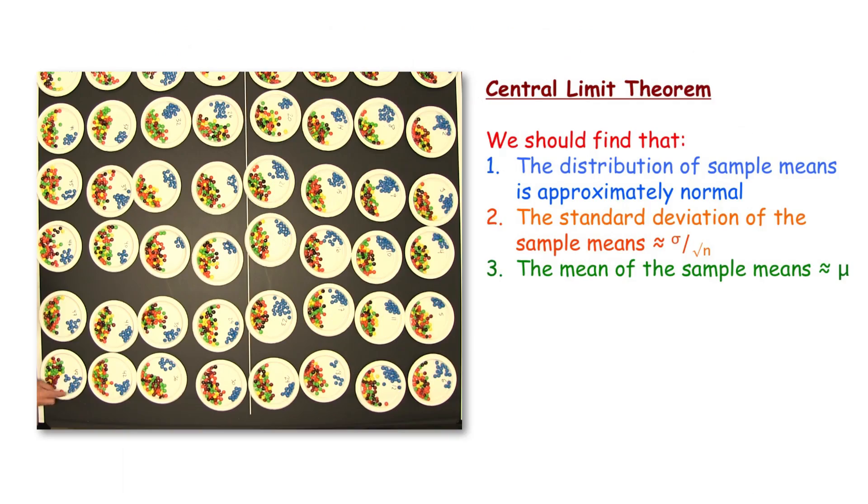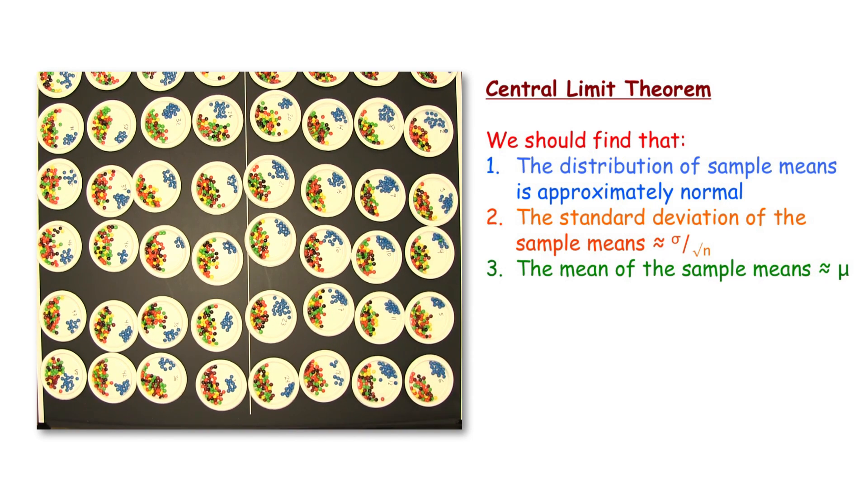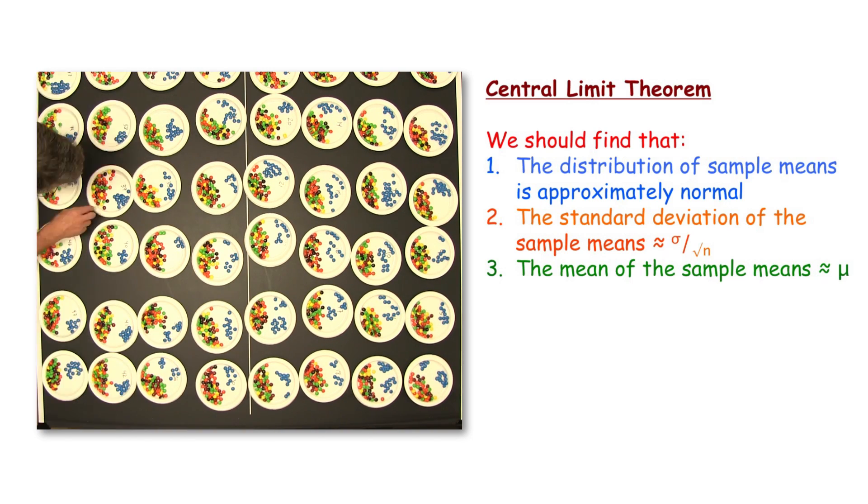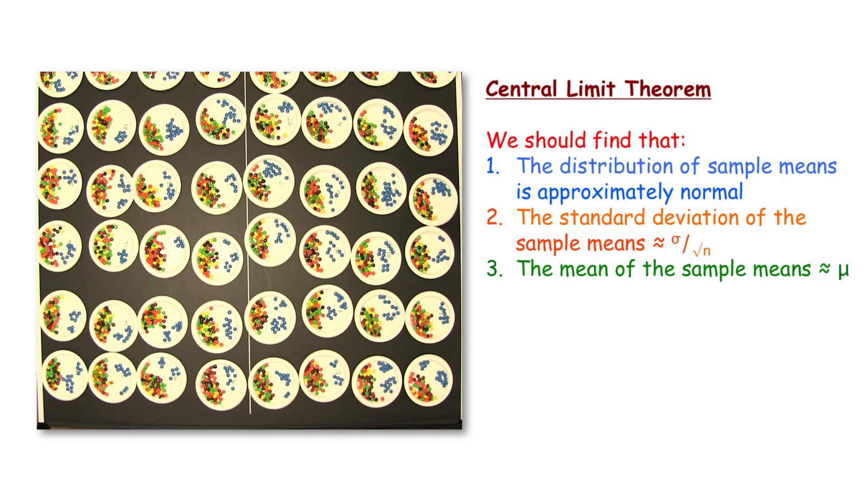Remember that the central limit theorem says that the distribution of sample means will be approximately normal, and we'll have an expected value of the mean equal to the population mean. Now, the true population mean we've computed by taking all blue M&M's across all plates and dividing by 48, the number of plates.